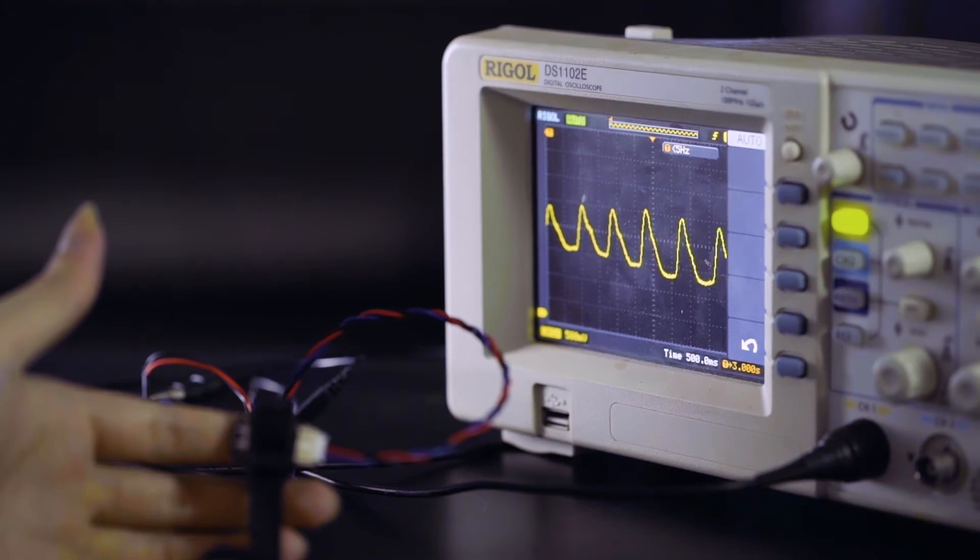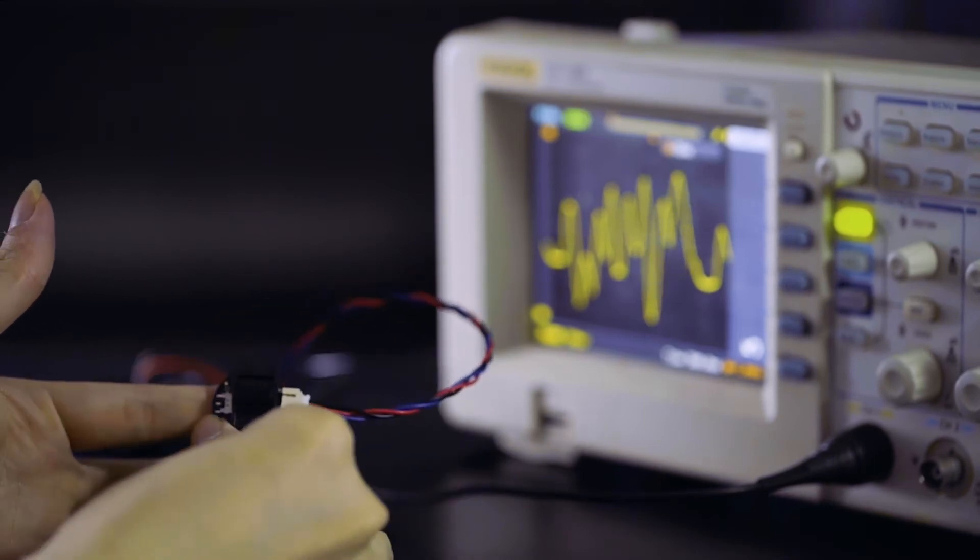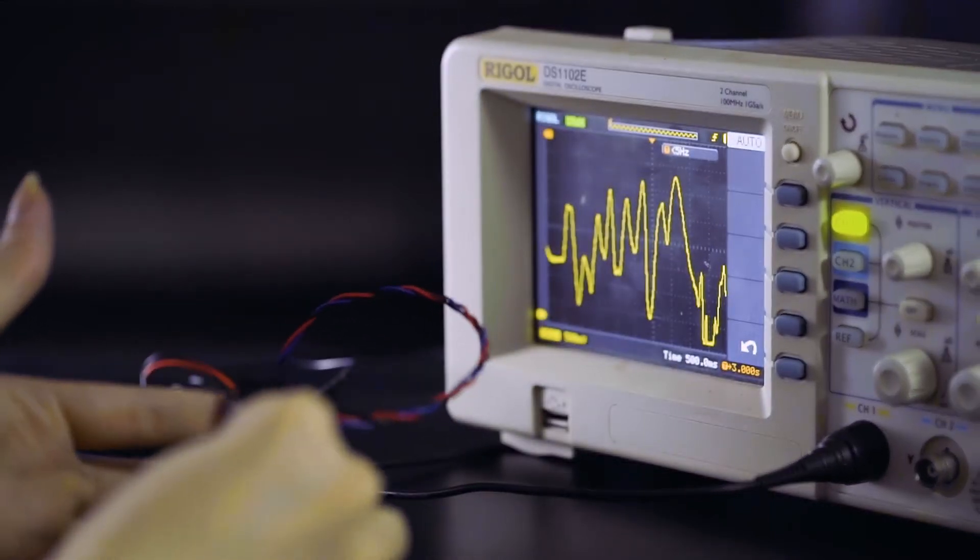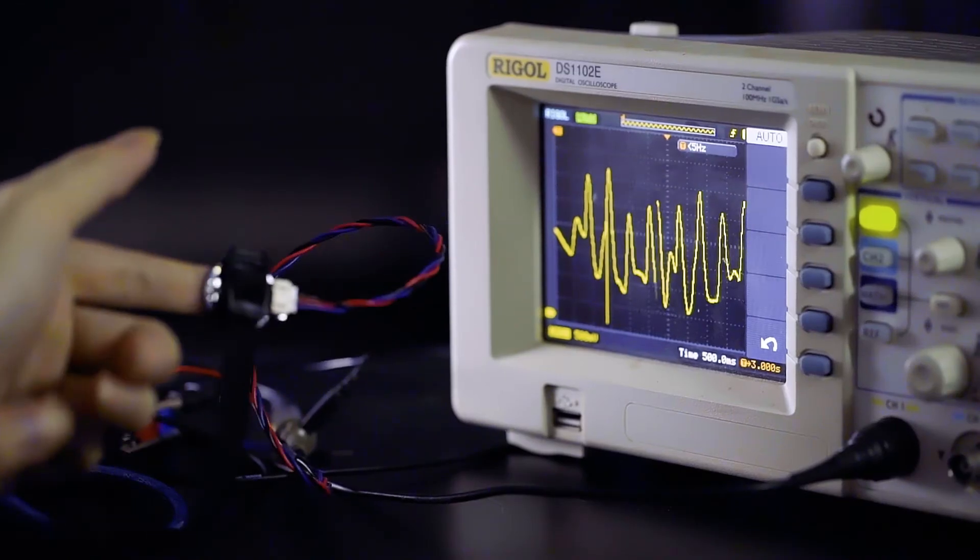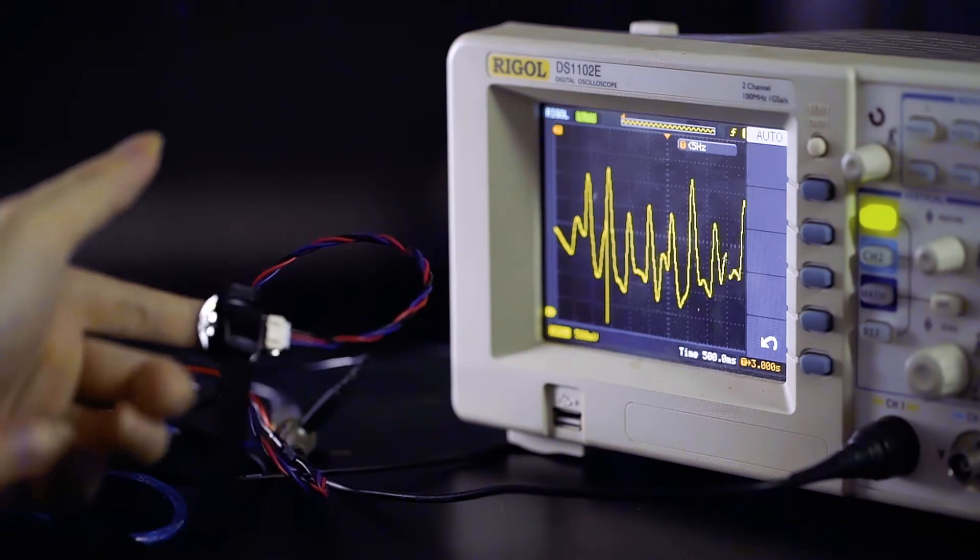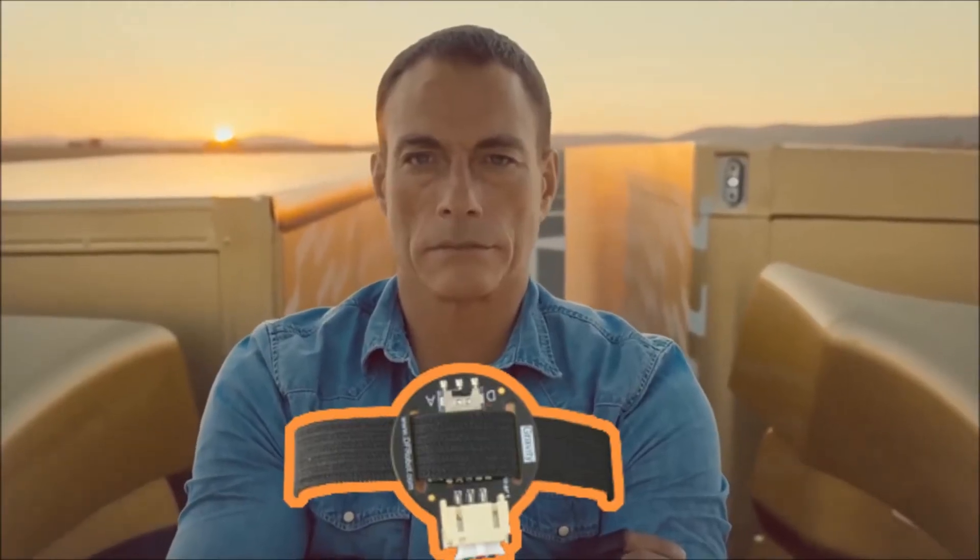Tip number two: stick the probe on the skin with stable pressure. Any change of their relative position may affect the intensity of the reflected light. Remember, a blood pulse can be generated by other factors such as instant body movement or simply a press on the surrounding skin. Tip number three: make sure the body is still during the measurement.